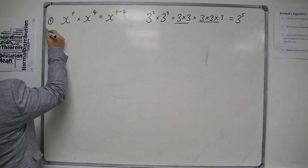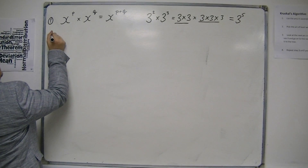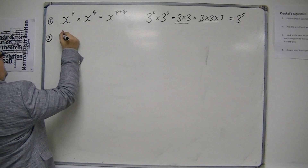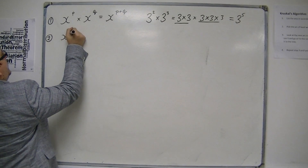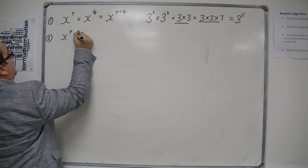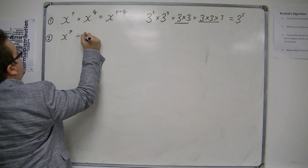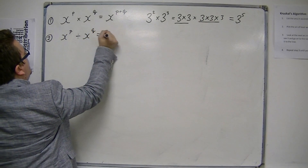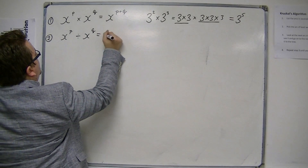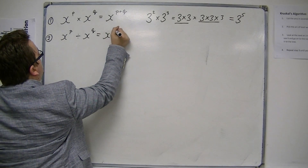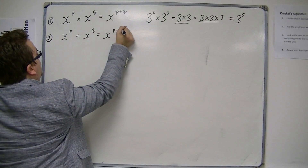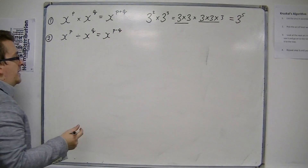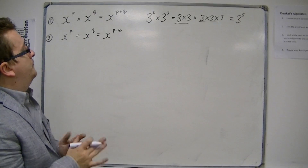Following on from that is that if you've got x to the p divided by x to the q, then this is x to the p minus q. The order does matter here.